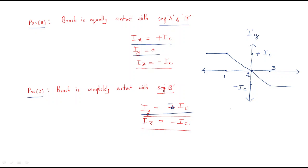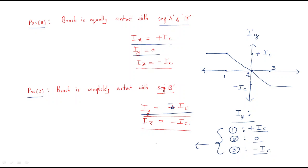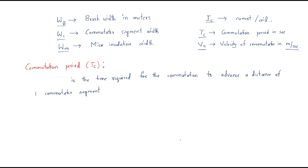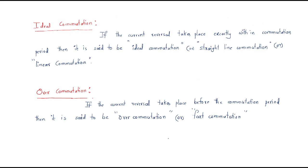To summarize: the current across the Y conductor is +IC at position one, zero at position two, and −IC at position three. It changes from +IC to zero, then from zero to −IC. This change of sign is known as current reversal, and this process — current reversal in a short-circuited coil — is known as commutation.